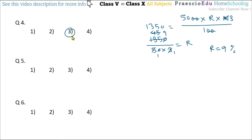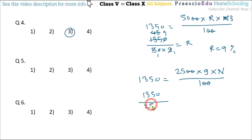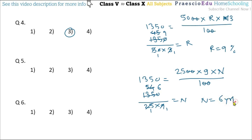Question number 5: in how many years will the interest on ₹2500 be ₹1350 at the rate of 9% per annum? So 1350 = 2500 × 9 × N / 100. The two zeros cancel, giving 1350 / (25 × 9) = N. That is 1350 / 225 = 6. So N equals 6 years — option number 1.